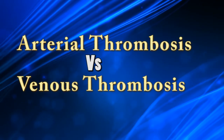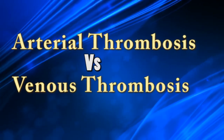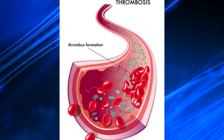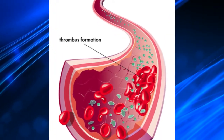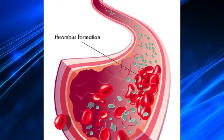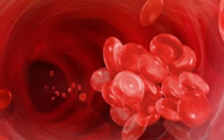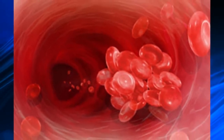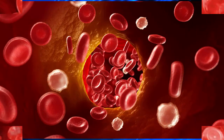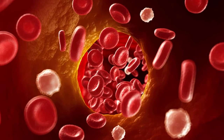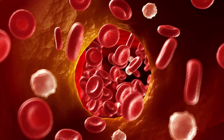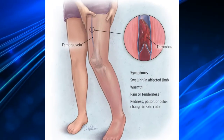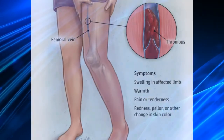Arterial Thrombosis versus Venous Thrombosis. Thrombosis is the formation of a solid mass from the constituents of blood within vasculature during lifetime. This thrombosis can occur within arteries or veins, and in this video we will see the differences between arterial thrombosis and venous thrombosis.